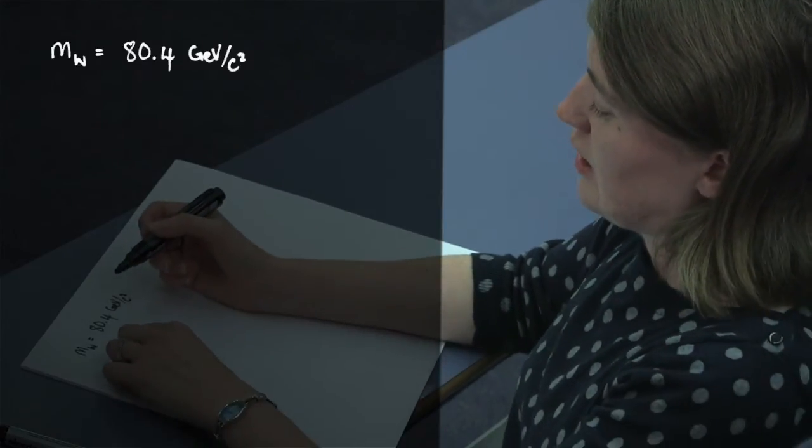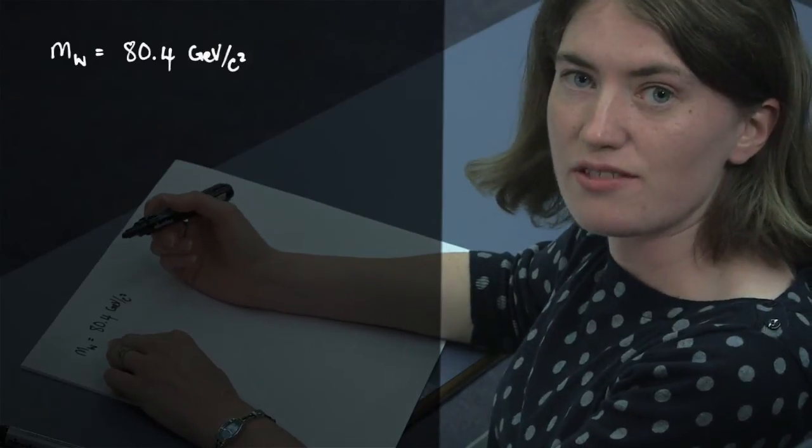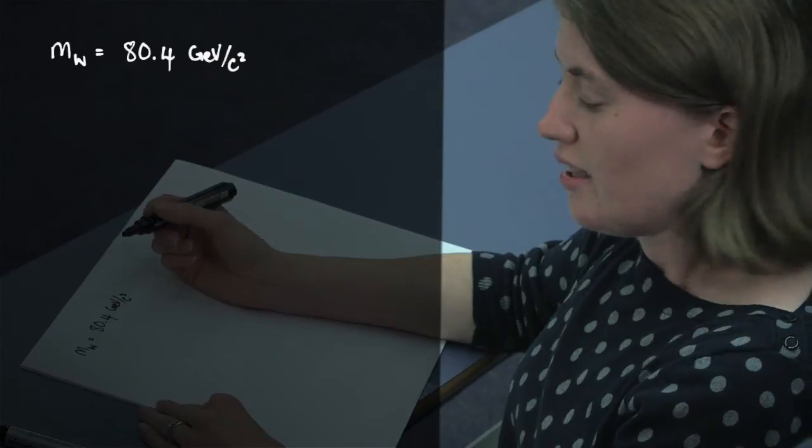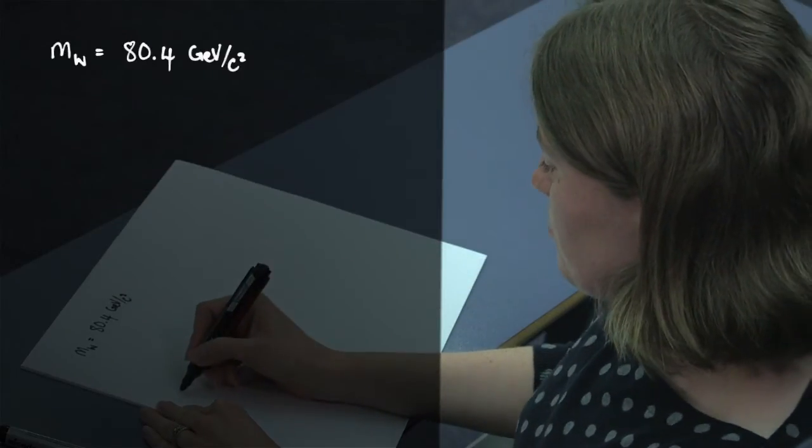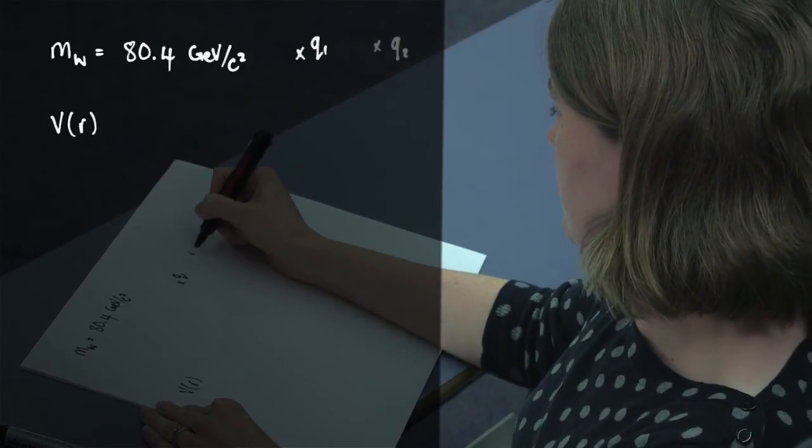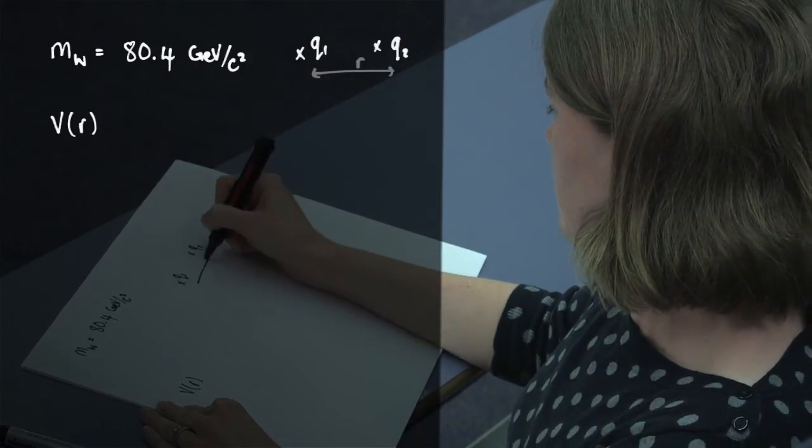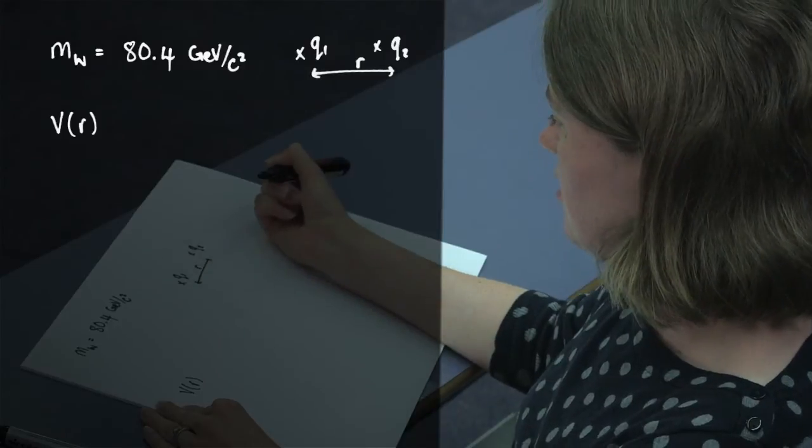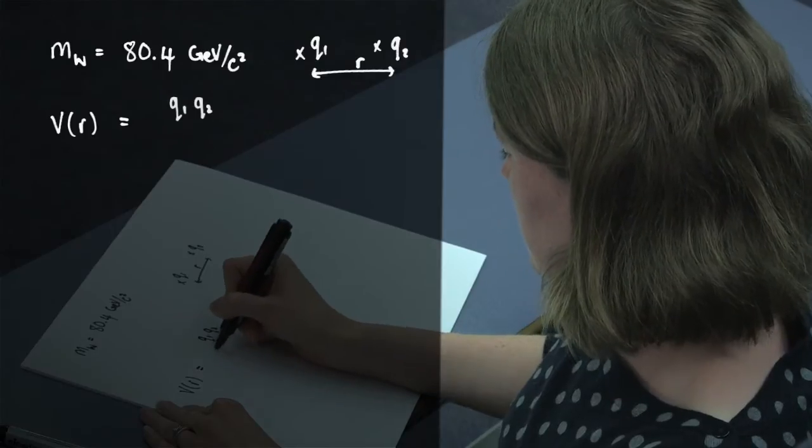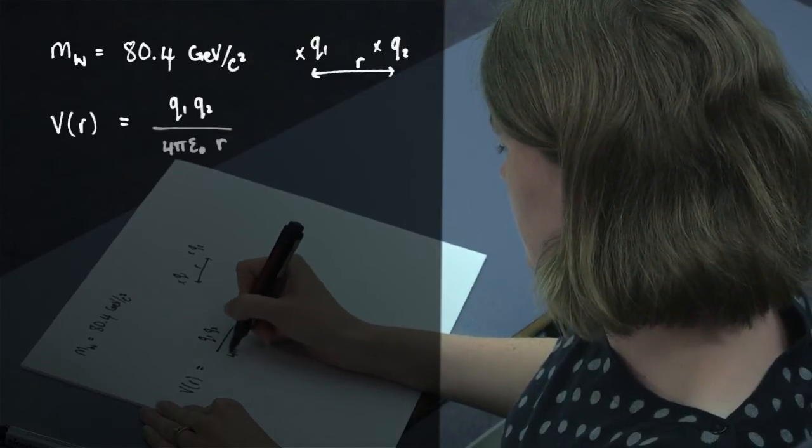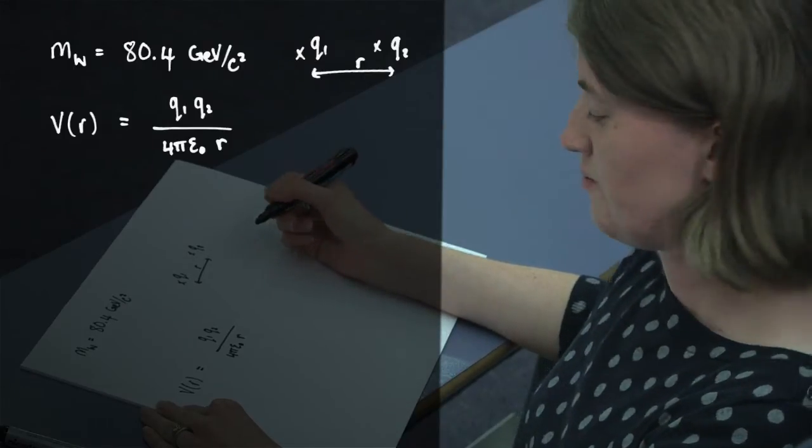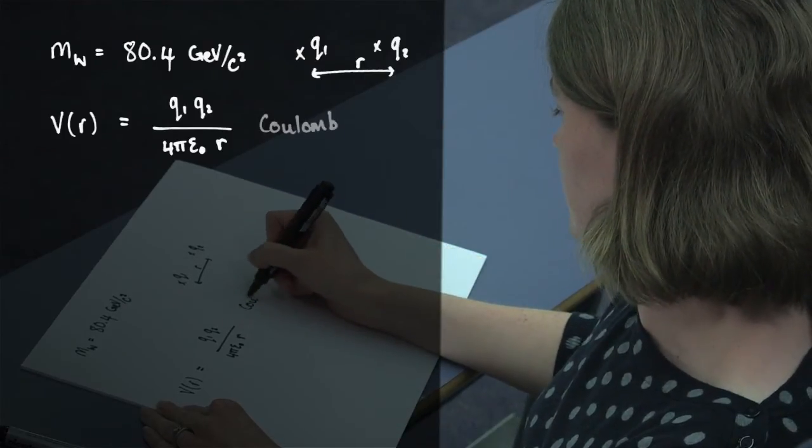But now, what is the real difference to having a massive force carrier to a massless one? If we return to electromagnetism for a bit, there we saw that you have a Coulomb potential, where if you have two charges with a charge q1 and q2 separated by a distance r, then the potential is just the product of these charges, some constants, and then the distance between the two particles. So that was the Coulomb potential.